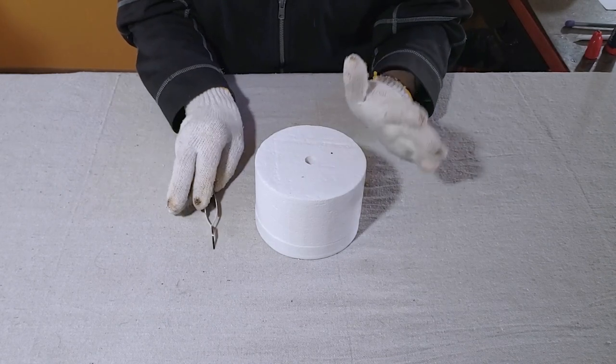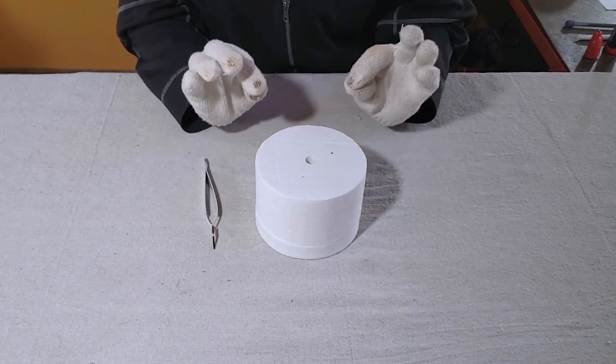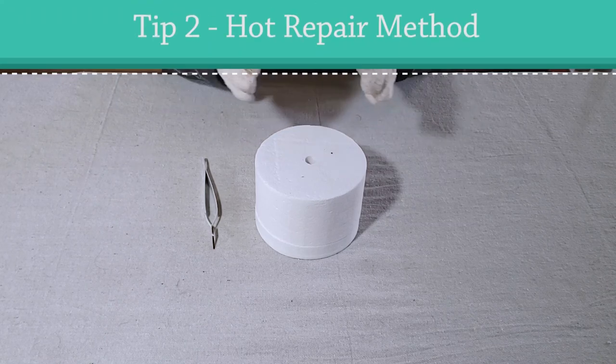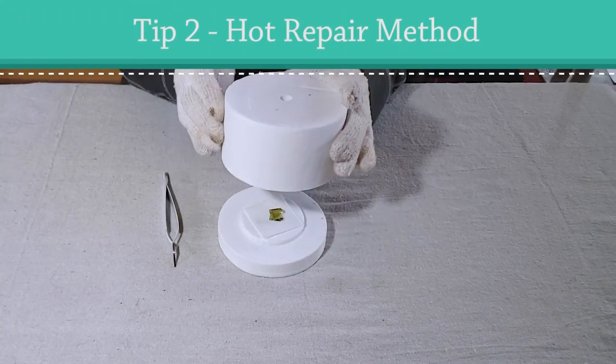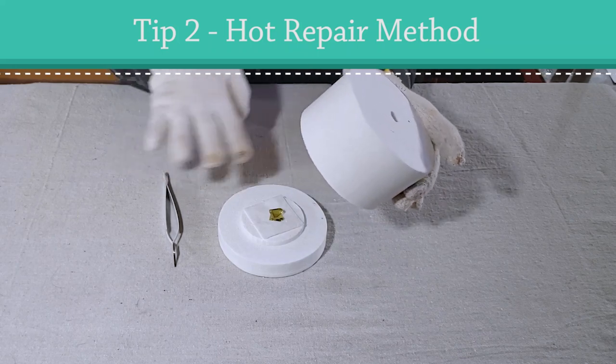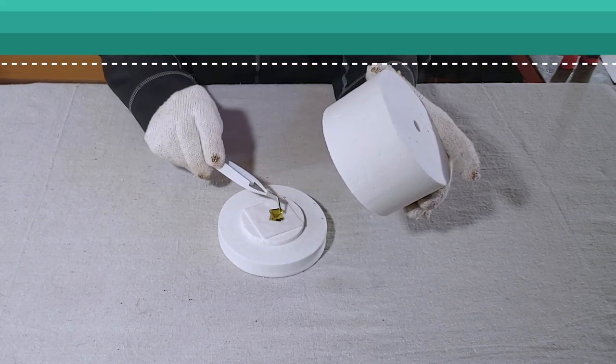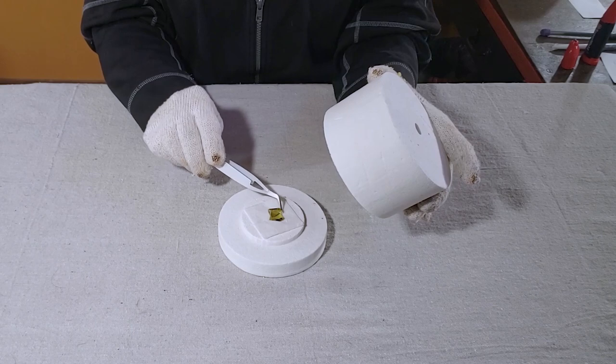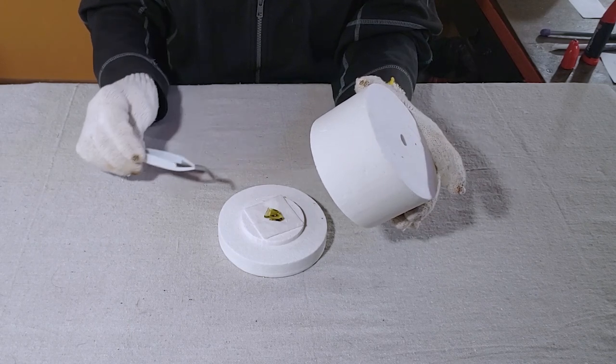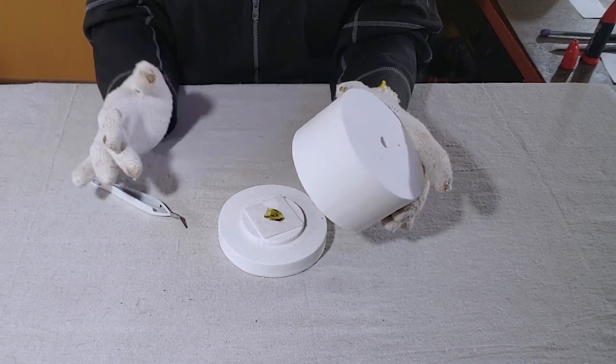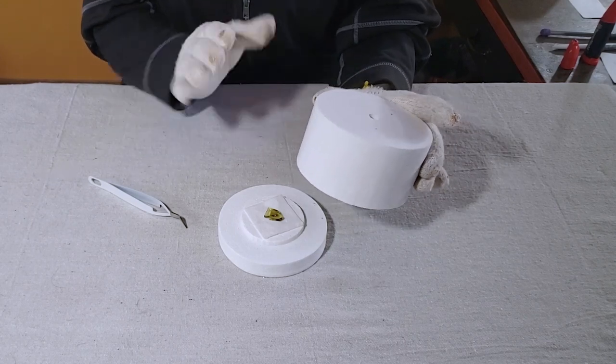Tip number two is what I'm calling a hot method for repairing your piece. If you've checked your kiln in the middle of your heating process and you notice that your pieces have slid off-center and they're not where you want them anymore, you can carefully remove the piece from the microwave.